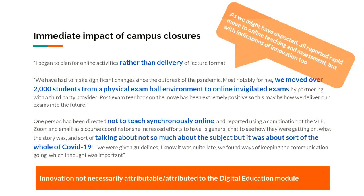We did acknowledge the campus closure in the questions and asked them to comment on what kinds of changes they'd experienced. As expected, they all reported a rapid move to online teaching, learning, and assessment during the past number of months. But within that, there were some indications of innovation, though it's very difficult to disentangle them from the pivot online — we can't really attribute those to the digital education module. But there are people talking about planning for activities rather than just delivering lectures online, and one person talking about a big change away from a large physical exam hall with 2,000 students, saying they're going to keep that change no matter what happens in the future.